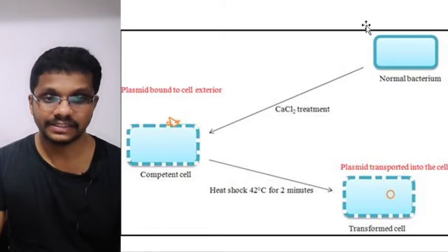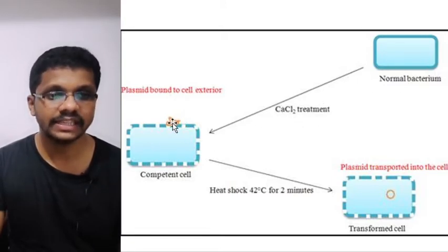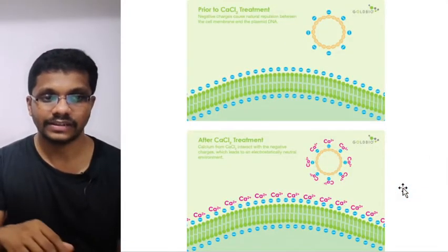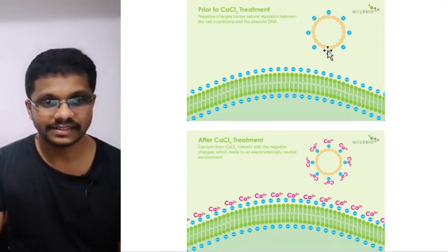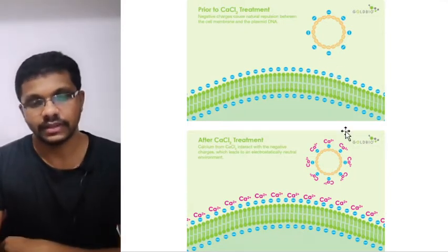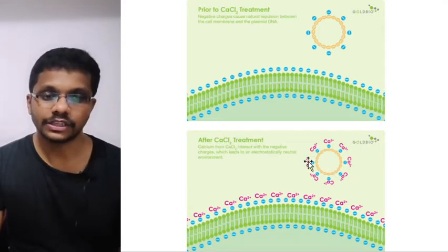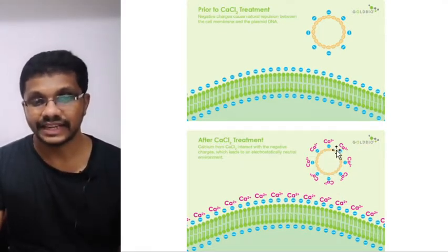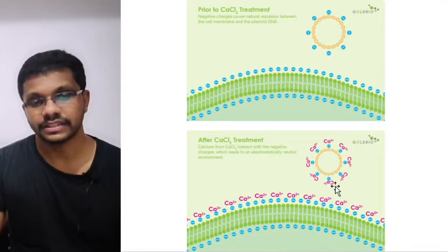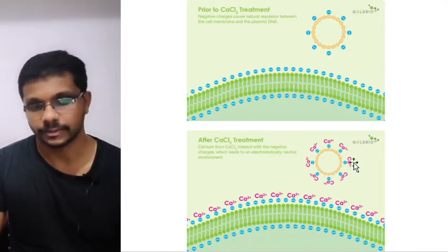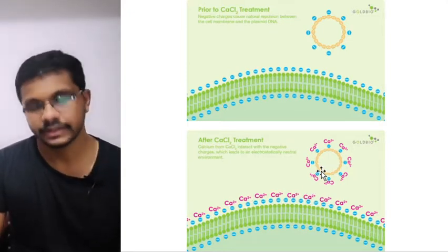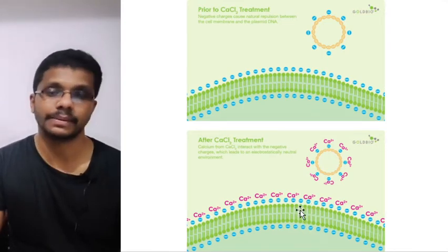At the molecular level: the DNA has a negative charge and the plasma membrane also has a negative charge, so they cannot come together. But when we add calcium, calcium binds to the DNA as well as to the plasma membrane, minimizing the net negative charge. Either it may become neutral, or most of the time calcium imparts a net positive charge to the plasmid while maintaining a negative charge on the plasma membrane, so they come together and bind. After binding, we give the heat shock to increase the permeability of the cell.